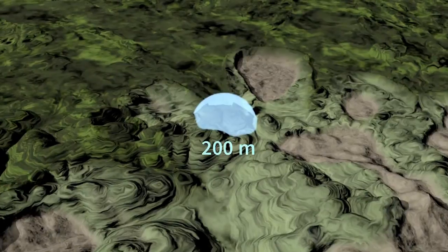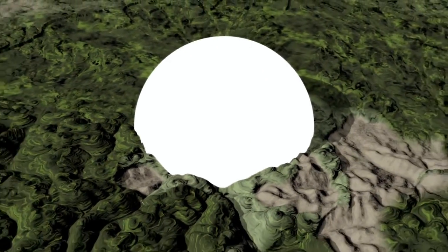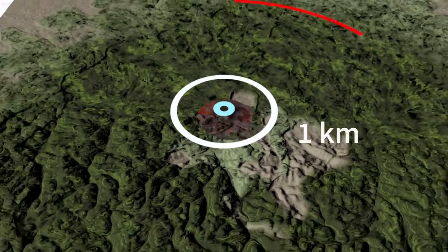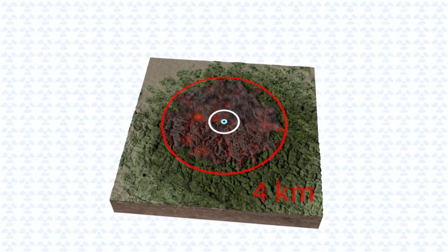Then comes an initial thermal flash, killing all living creatures within a one-kilometer radius and setting ablaze buildings and objects as far as four kilometers away.